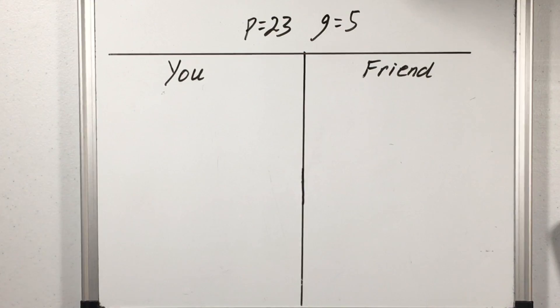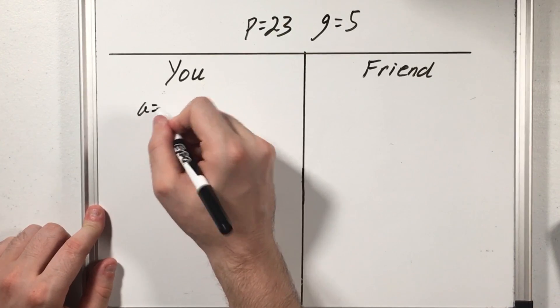Then what we're going to do is pick a random integer that's less than 23 but this one we keep to ourselves. We don't say it or send it or anything like that. Like my value which I'll call A will be 6.